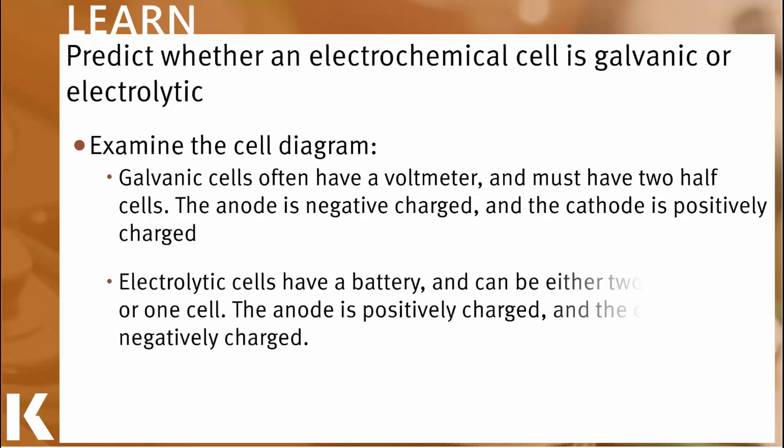Contrast all of that with an electrolytic cell, which must have a power supply. Remember, these are non-spontaneous reactions, therefore we need an external power supply to power the reaction. Most often that's a battery, but it could be something else, so you look for that power supply and think electrolytic. The configuration of electrolytic cells also could be more complex than a galvanic cell. They could be two individual half cells or the entire reaction could be contained within one cell. In any case, an electrolytic cell always has a positively charged anode and a negatively charged cathode.